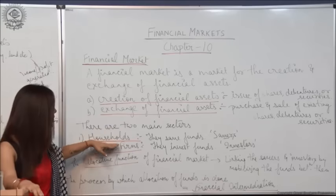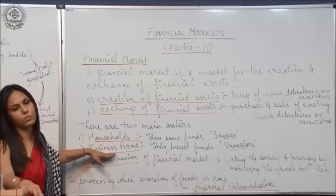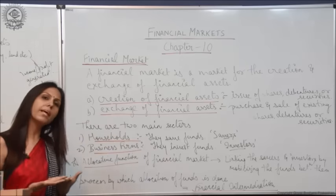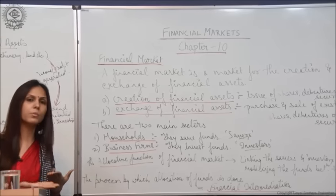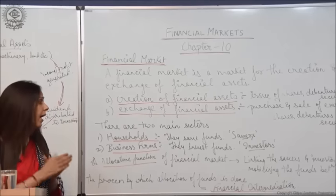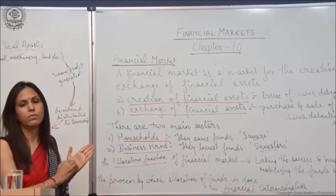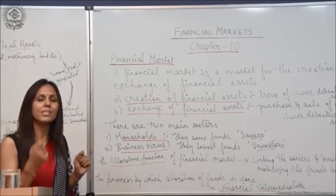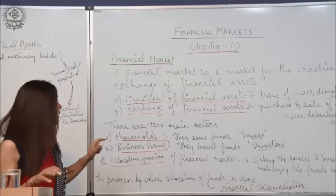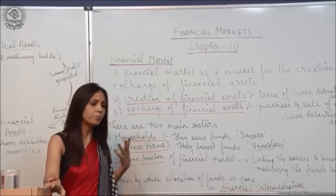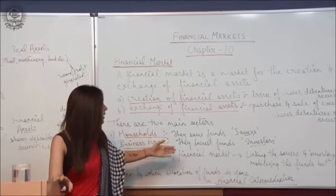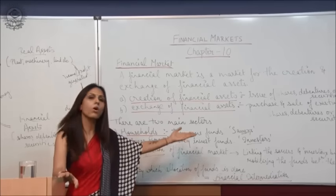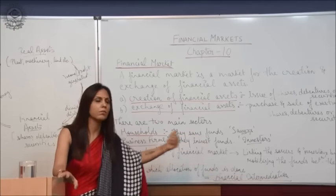The first one is the households and the second one is the business firms. These households have surplus funds with them and they are called savers. So households do saving. That is why they are called savers, and the business firms — the borrowers — they invest the fund and they are called investors.